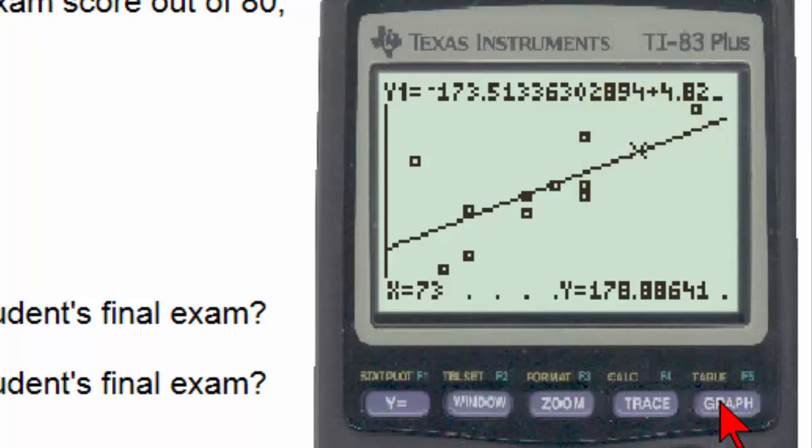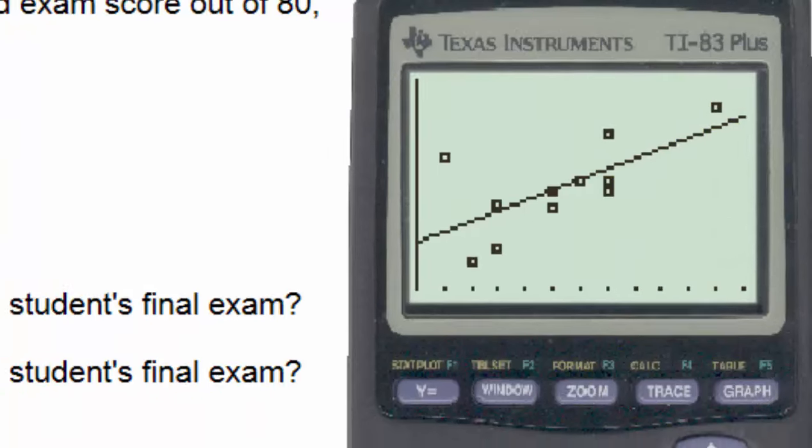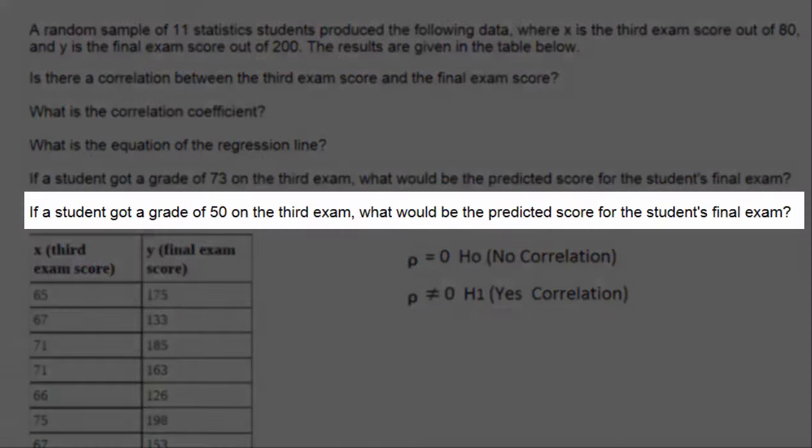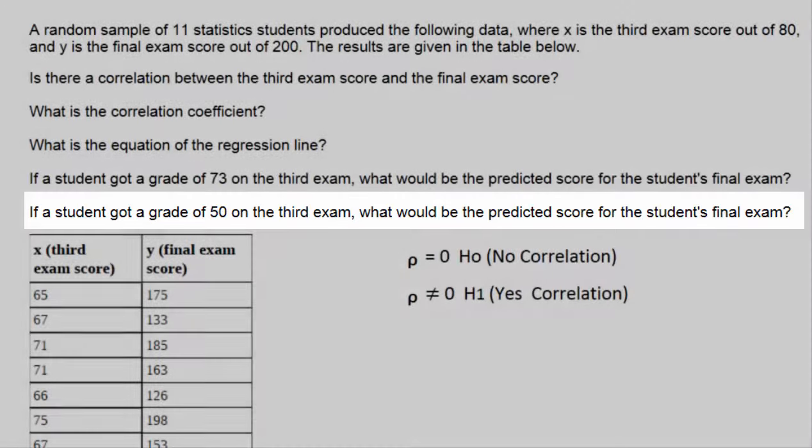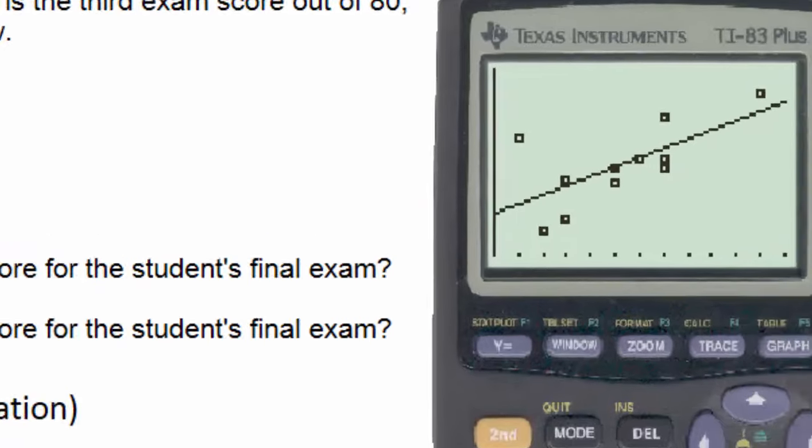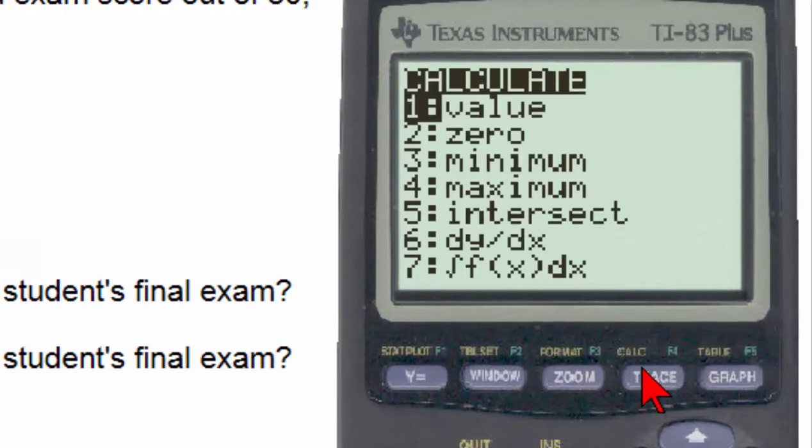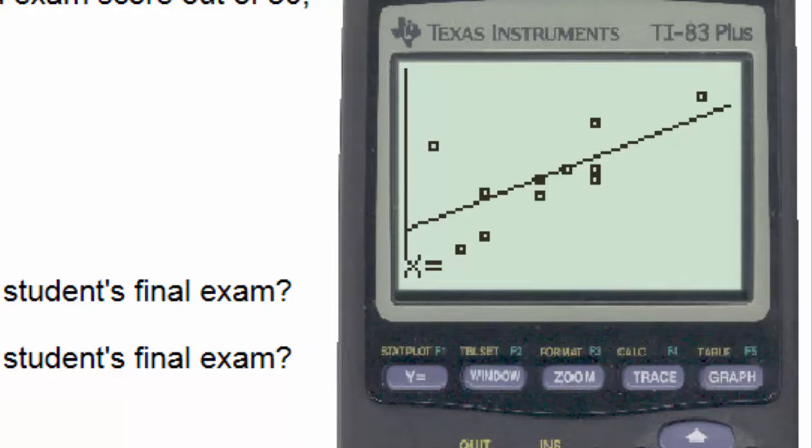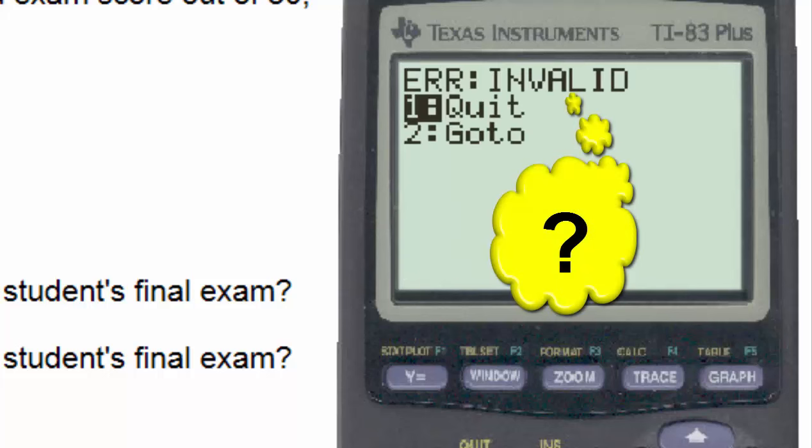To clear the graph, just simply hit the graph key, and the graph is cleared. Answering the question, if a student got a grade of 50 on the third exam, what would be the predicted score for the student's final exam? We can attempt this in the same way, going to the calculate button, selecting value, and inputting 50, and hitting enter. And when we do so, we see that we get an error statement.